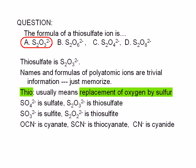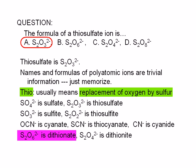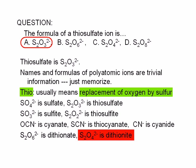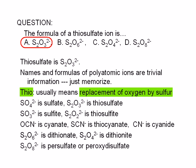Choice B, S2O6 with a negative 2 charge, is dithionate. Choice C, S2O4 with a negative 2 charge, is dithionite. This is one case where these ions do not differ by only one oxygen — the dithionate has two more oxygen atoms compared to dithionite. Finally, Choice D, S2O8 with a negative 2 charge, is called persulfate or peroxydisulfate.